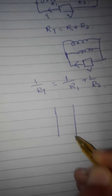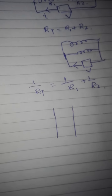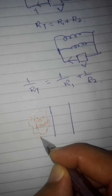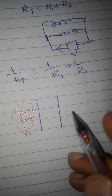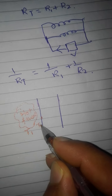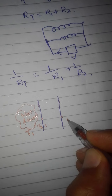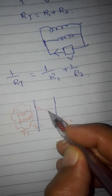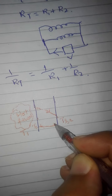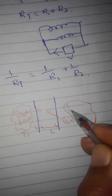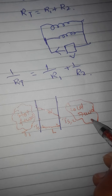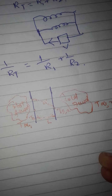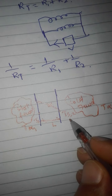Now suppose this is a plane wall. There is a hot fluid on one side at temperature T-infinity-1 with surface temperature TS1, and a cold fluid on the other side at temperature T-infinity-2 with surface temperature TS2. The heat flows from the hot side through the wall in this direction, where L is the length of the wall.